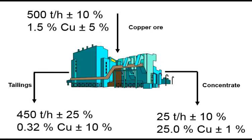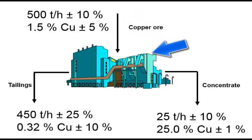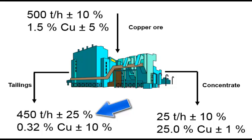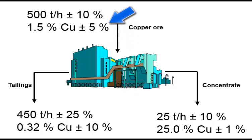A level of confidence is associated with each measurement. In this example, the level of confidence is better for the measurement of the chemical composition compared to that of the mass flowrate. For the mass flowrate, the level of confidence is 10% for the feed and the concentrate and 25% for the tailings. For the copper content, the level of confidence is 10% for the tailings, 5% for the feed, and 1% for the concentrate.